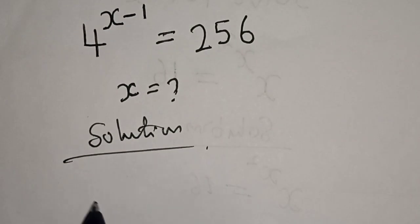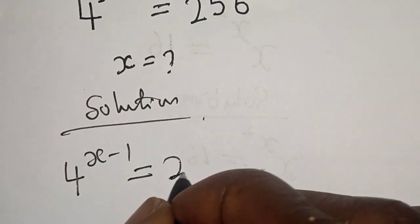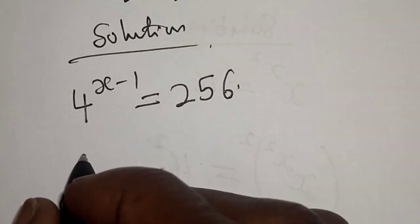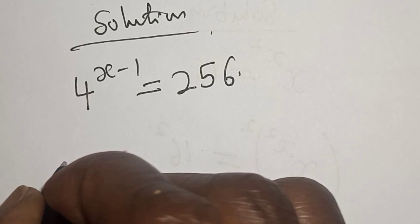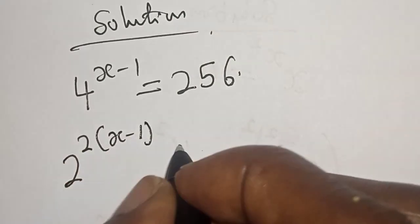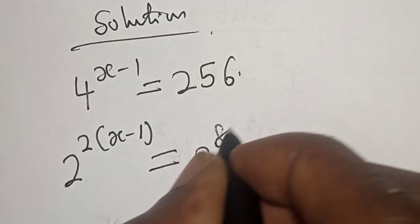We have the given equation 4 raised to power x minus 1 is equal to 256. Now this is the same thing as 2 raised to power 2 times x minus 1 is equal to 256, which is 2 raised to power 8.